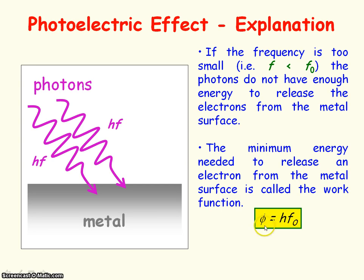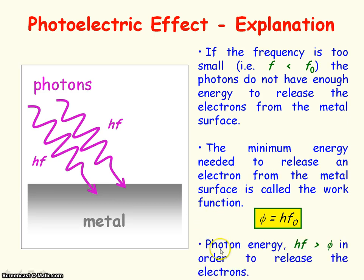The minimum energy needed to release an electron from a metal surface is called the work function. The work function, given by the symbol φ, is equal to hf₀, where h is Planck's constant and f₀ is the threshold frequency — the minimum frequency of electromagnetic radiation needed to release electrons from a metal surface. So you need the photon energy hf to be greater than the work function, meaning f must be greater than f₀.